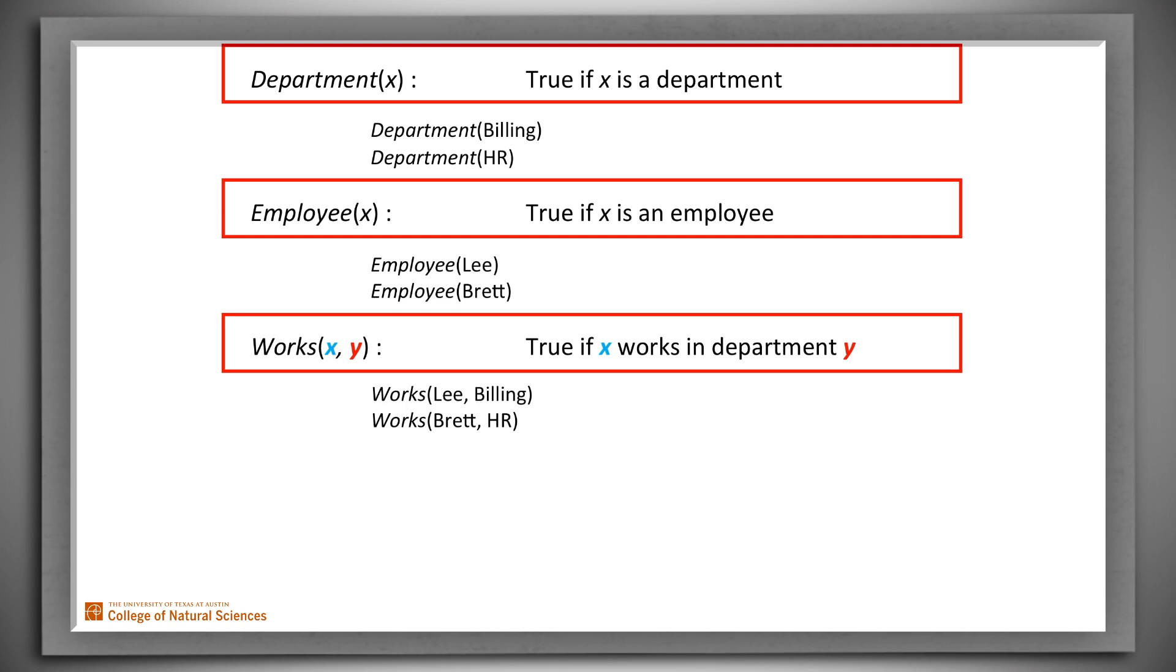Or if it helps to think of it that way, we could even use the symbols object one and object two instead of X and Y. Now let's go back to using X and Y just because that's what we generally do. It's easier. So we've defined Works of XY to be true just in case X works in department Y.